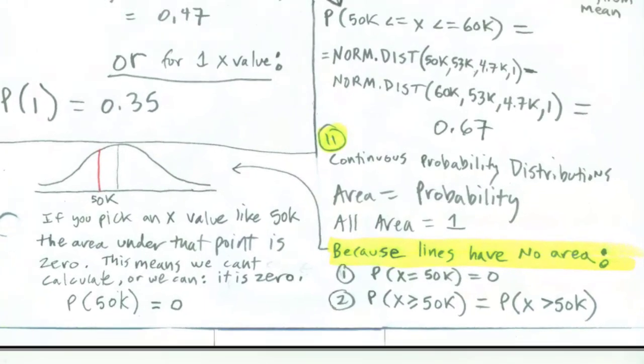But I want to emphasize here for our continuous probability distribution functions for all three: normal, uniform, and exponential. Area will equal probability. All area will equal 1. We're not allowed to calculate an exact x.